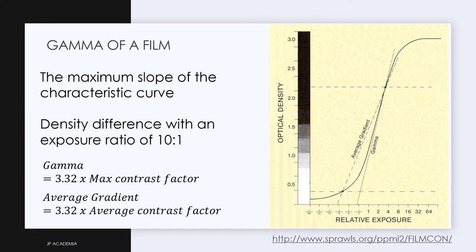When it comes to film, we can define a slope based on this graph at the right. The film's gamma value is the maximum slope of the H&D curve shown here.